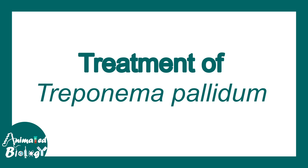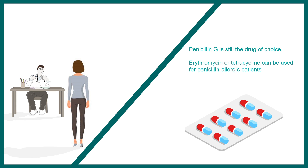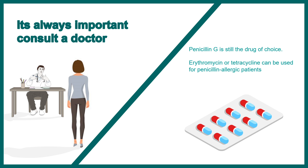For treatment of Treponema pallidum, since it is a bacterial disease it can be treated with antibiotics. Penicillin G is the drug of choice. Erythromycin or tetracycline can also be used but must be monitored by a physician. Visiting a doctor at the early stage significantly increases the chance of curing. If the infection reaches the tertiary stage, there are many complications to manage — so early detection and prompt initiation of treatment is essential for complete healing.